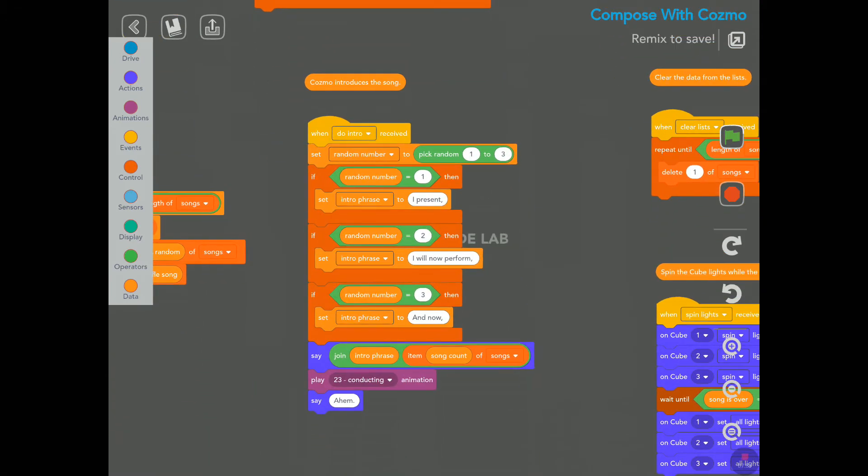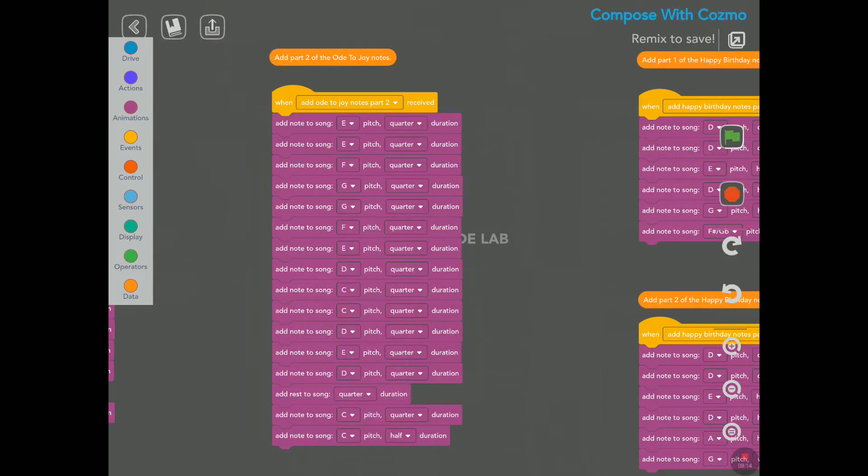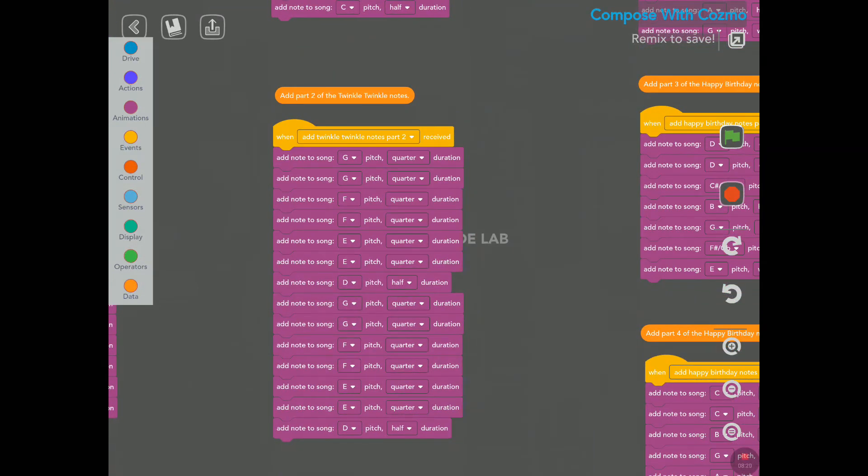Here we have the loop for play a song based on the song count. Here we have Cosmo introduces the song. And we did hear him say, I present, or it's a random here. He said that I will not perform. I found that very formal and funny, of course. And then, that's it here. Add part two of the Ode to Joy notes. We have part one and part two. I don't know why. And I don't want this video to be too long, so I'm not going to look at that.